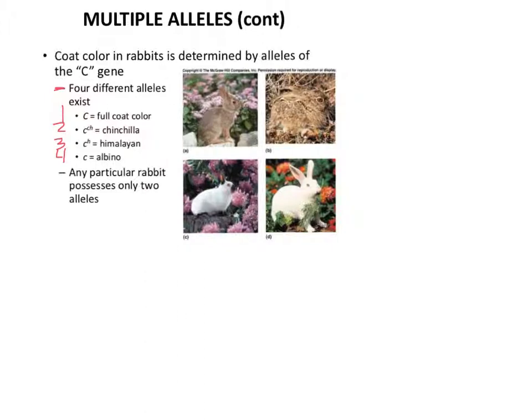But then if there is no big C, second in rank is going to be the chinchilla. The only way Himalayan is going to be shown is if one and two are gone. And then the same thing with the albino - the only way that albino is going to show is if one, two, and three aren't there. So that's sort of like the rank.